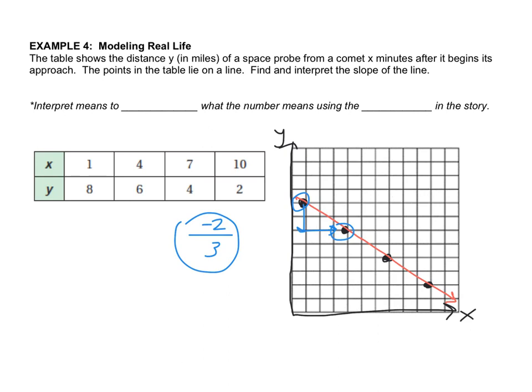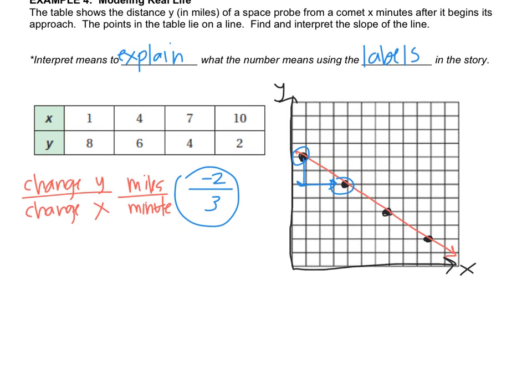So interpret means to explain what the number means using the labels in the story so if slope is change change in y over change in x what does negative two change in y mean well the label for y is miles and the label for x is minutes so what does negative two miles mean in the story about the space probe and the comet well negative two miles means that it's going down or closer two miles and and minutes is pretty self-explanatory three minutes represents three minutes of past in time so if interpret means to explain what the numbers mean using the labels in the story then the interpretation sentence would look look like this the probe moves two miles closer every three minutes that's the interpretation sentence.